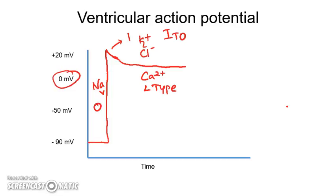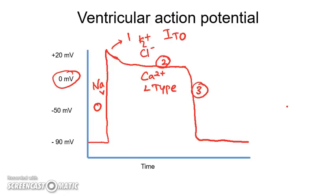The membrane potential stays in a flat line during the plateau. After some time, the calcium channels close. Once they close, the potassium ions going outside are unopposed, and this brings the membrane back to the resting membrane potential. This is Phase 2 (the plateau phase), and the subsequent repolarization is Phase 3, the late repolarization.